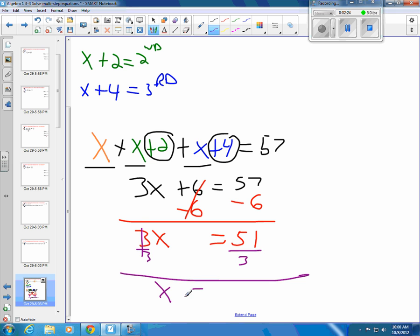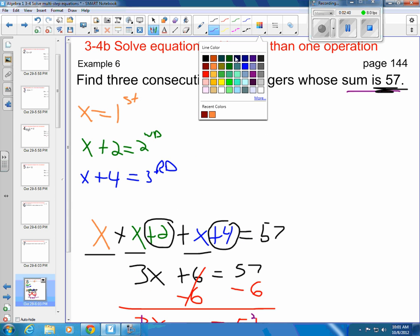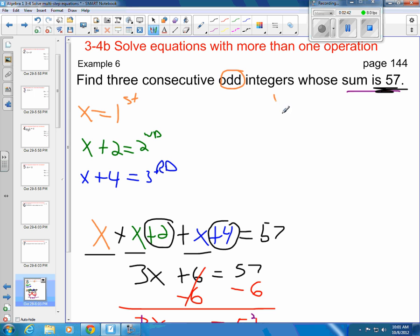So I know x is going to be equal to... well, 3 goes into 5 one time with 2 left over, and 3 goes into 21 seven times. So my x is 17. So my first integer is 17. So I know that my x is 17. So then my x plus 2 would be 19, and my x plus 4 would be equal to 21.